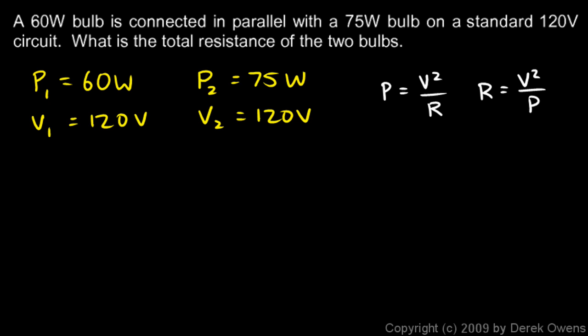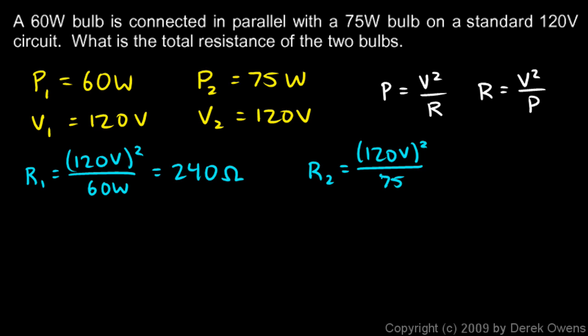So I can find R1 is going to be V1 squared over P1. That'll be 120 volts squared over 60 watts, and R1 comes out to be 240 ohms. And I can find R2 also. R2 will be V2 squared over P2, so that's 120 volts squared over 75 watts, and that comes out to be 192 ohms.